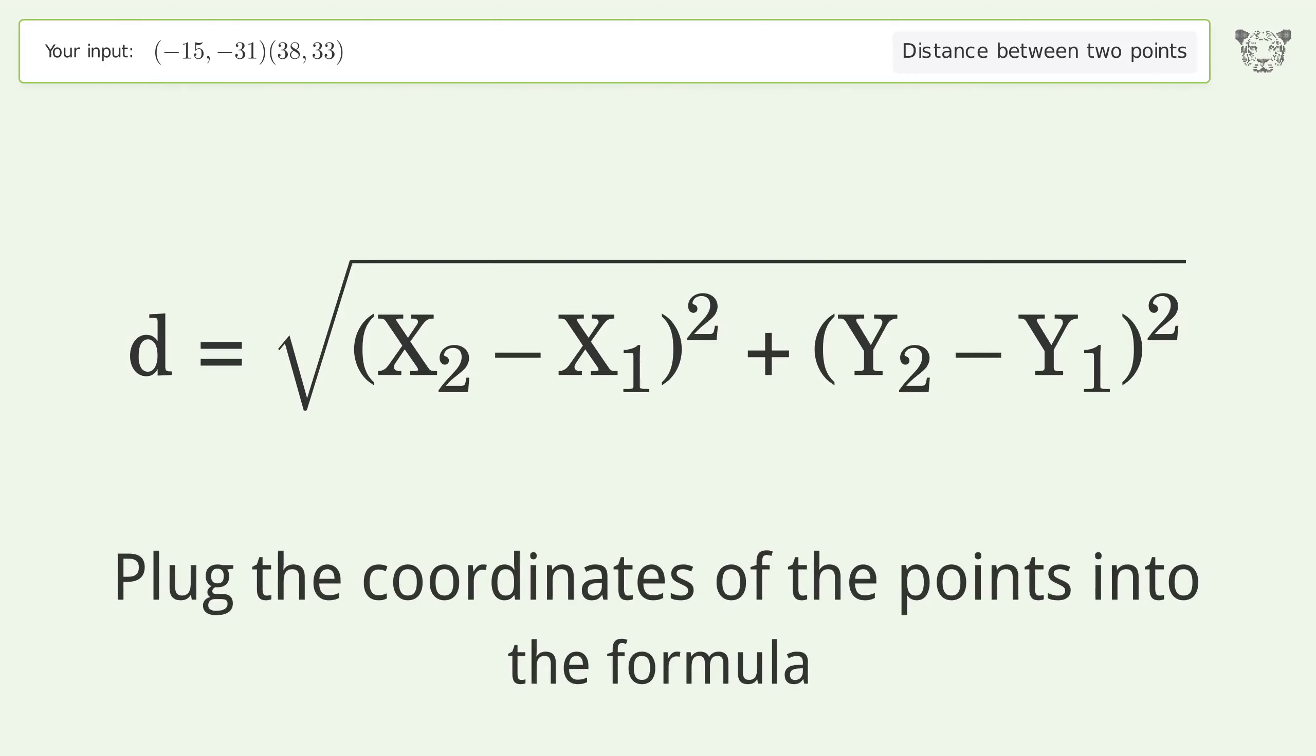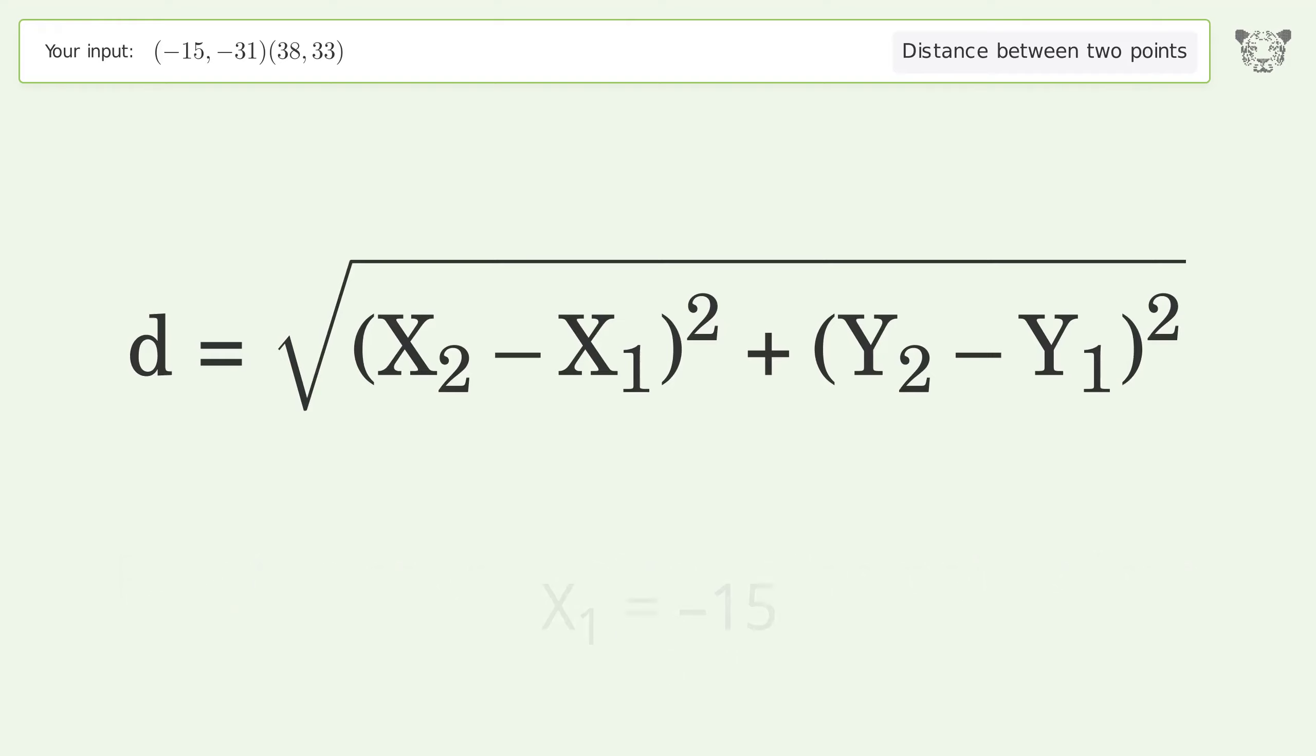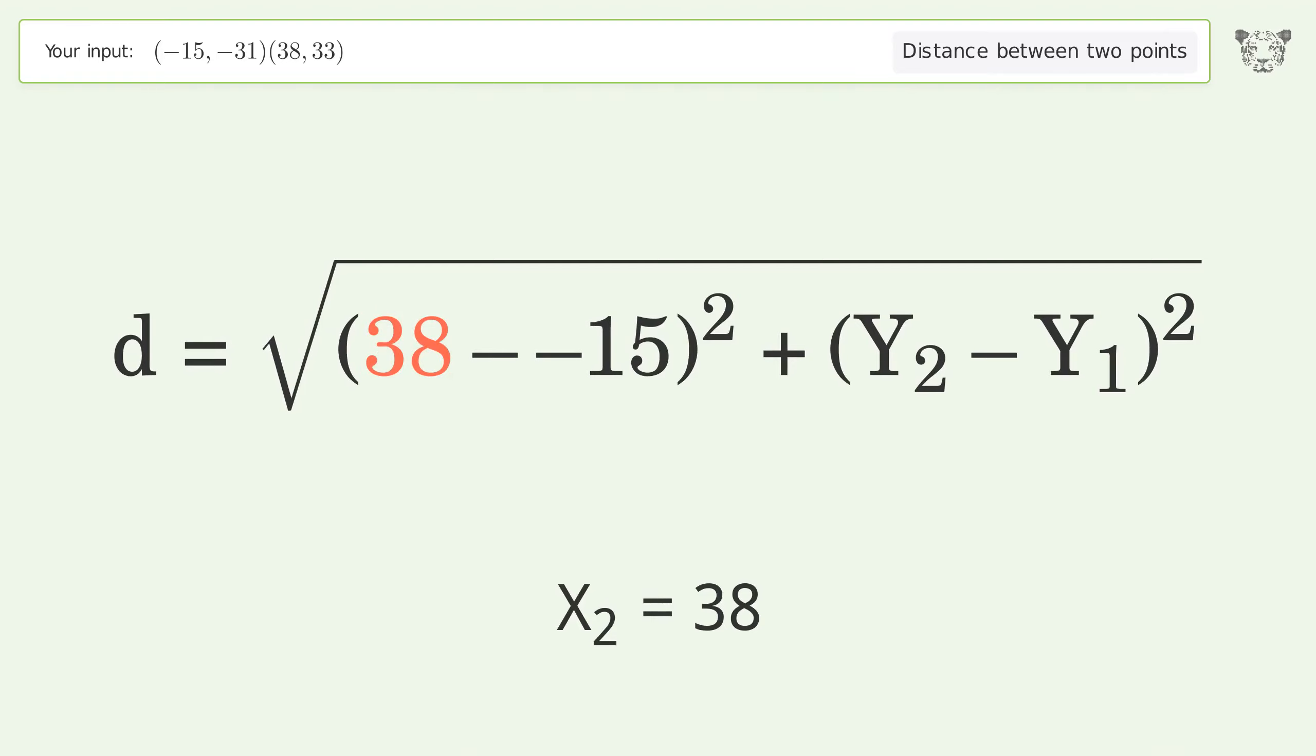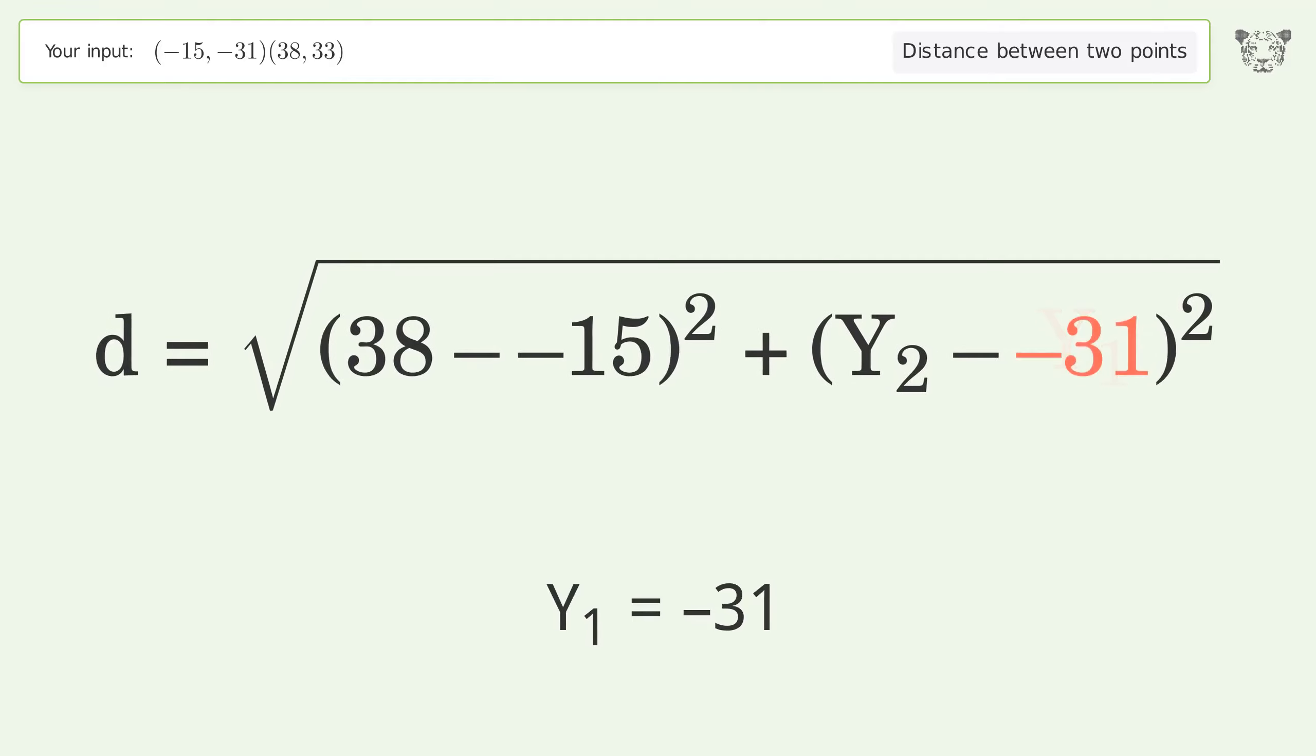Plug the coordinates of the points into the formula. x1 equals negative 15, x2 equals 38, y1 equals negative 31, y2 equals 33.